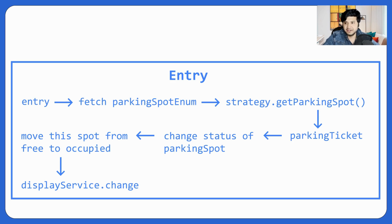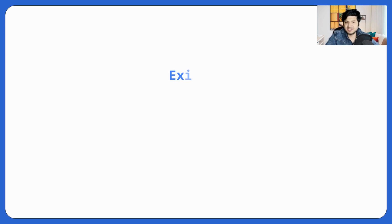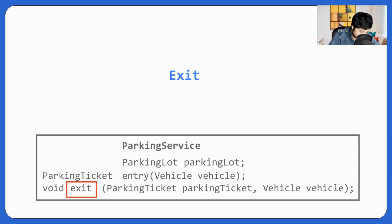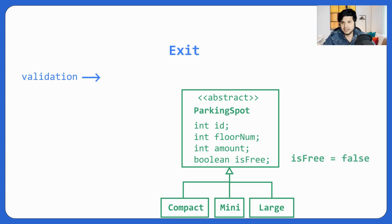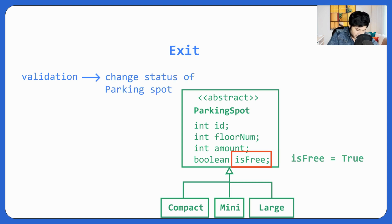Now let's talk about exit. A person comes with his vehicle, and either the automated system or parking attendant will first do validation — matching the vehicle with the parking ticket to check if they match. If validation is false, we raise an exception. If it's true, the parking spot is now free. We calculate the amount and change the status of that parking spot.